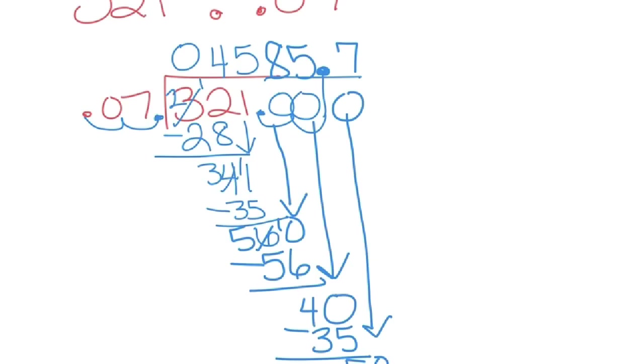In this case, we have a pretty long answer, 4,585.7 with a little 1 down there. Let's go ahead and divide one more time so that we can round our answer. So, we'll add one more 0. Bring it down.